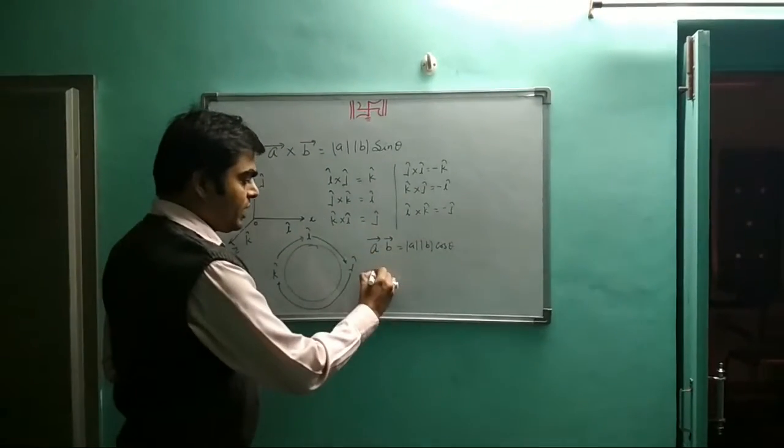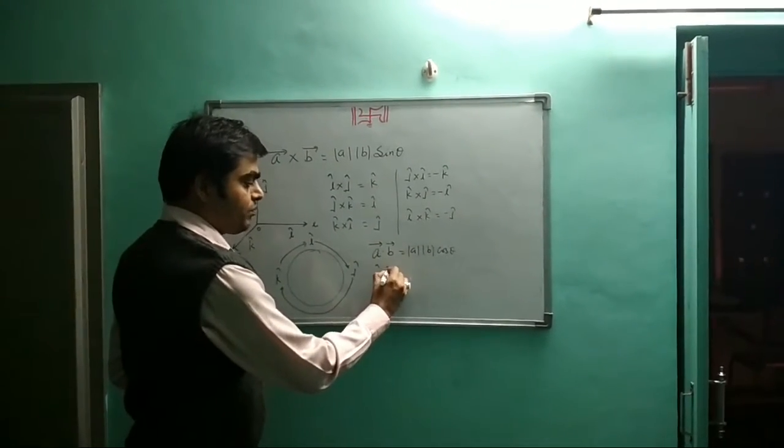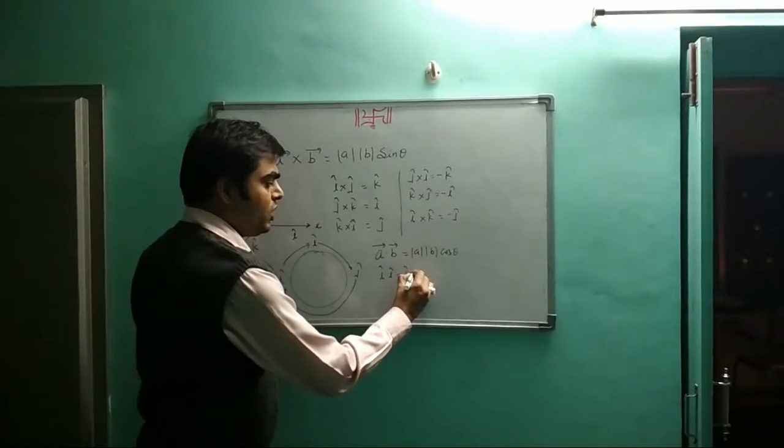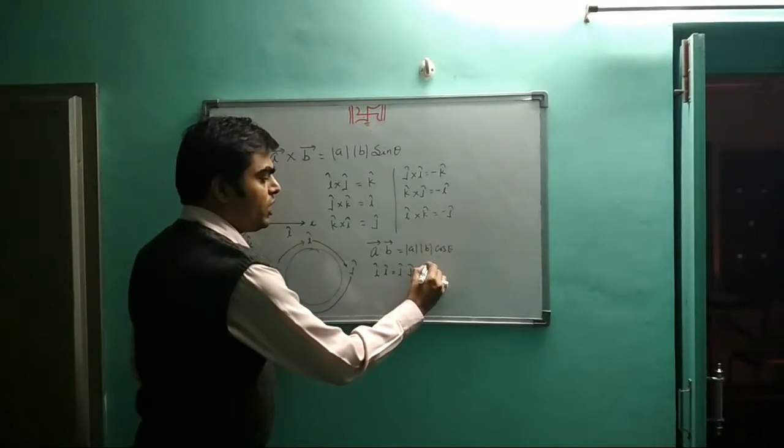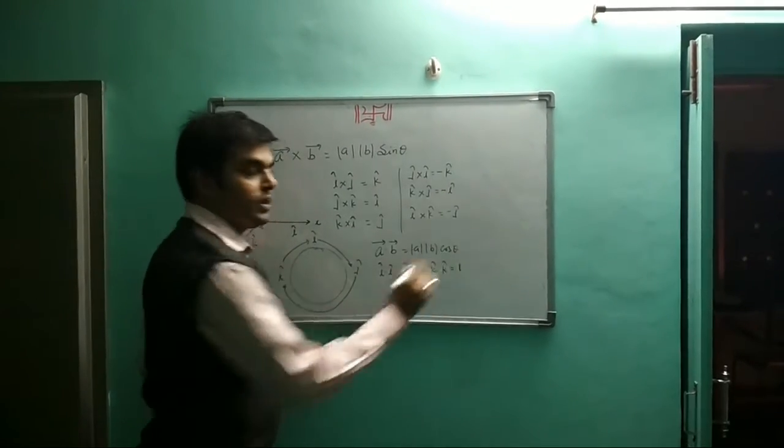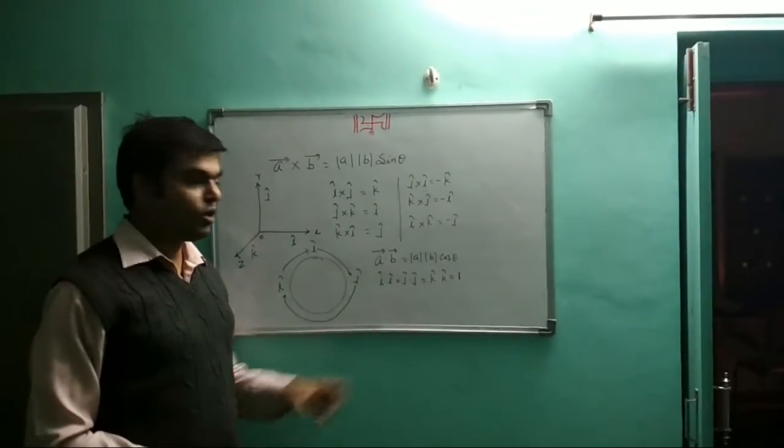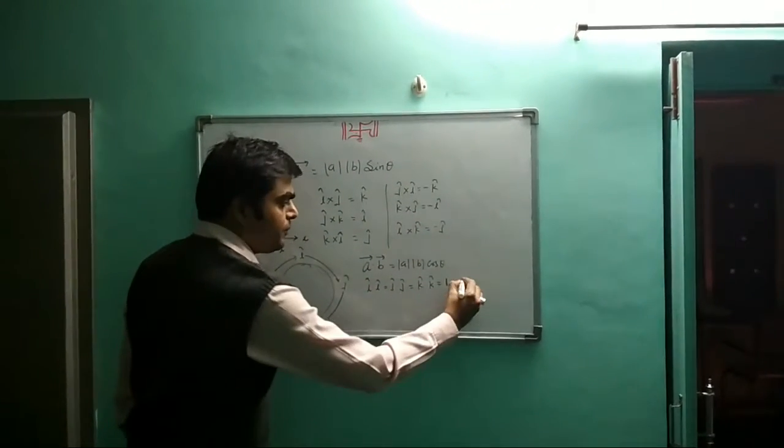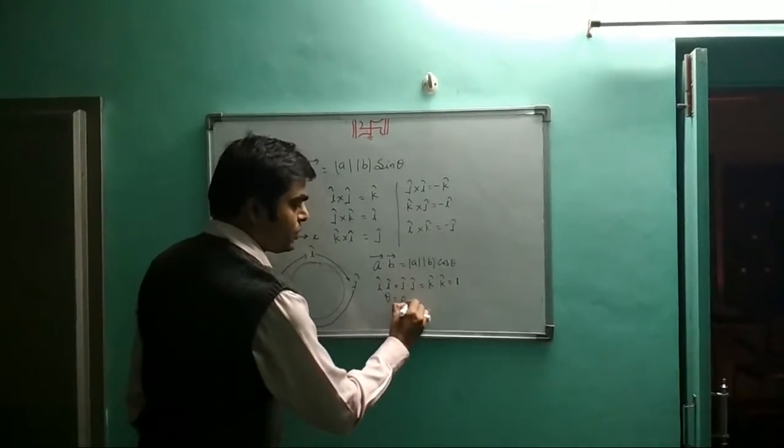For unit vectors: i dot i, j dot j, k dot k all equal 1. This is because theta equals 0, and cos 0 equals 1.